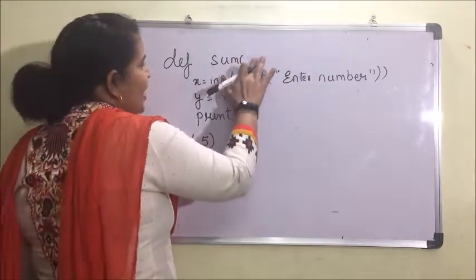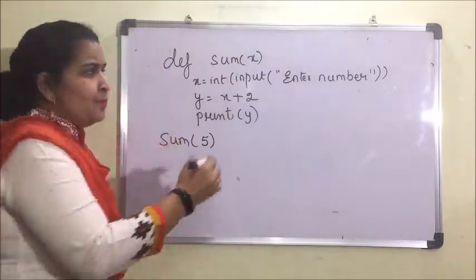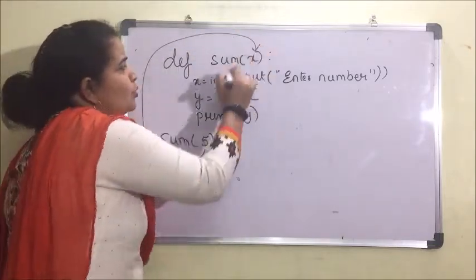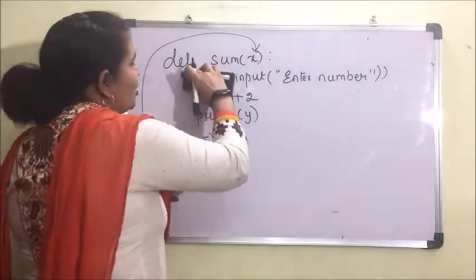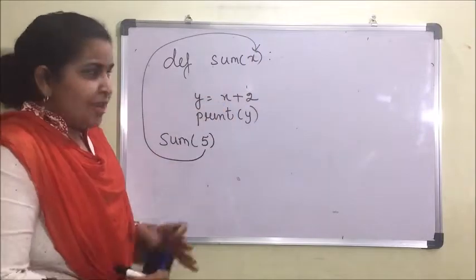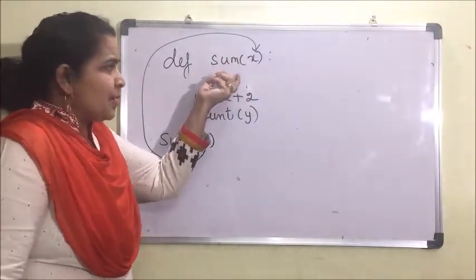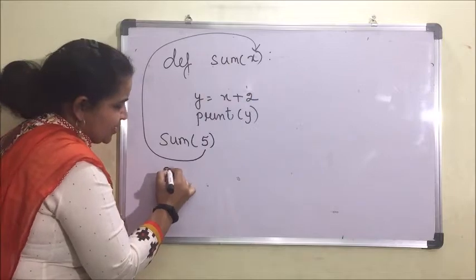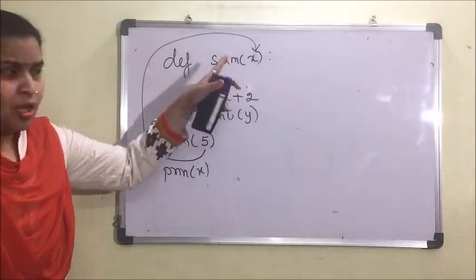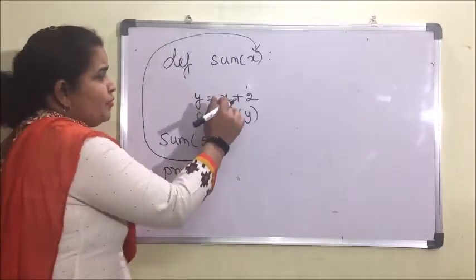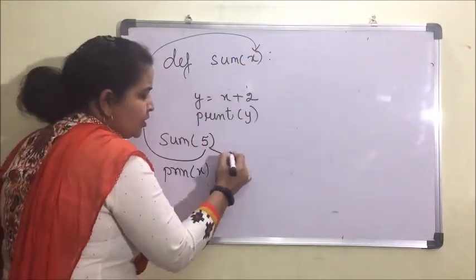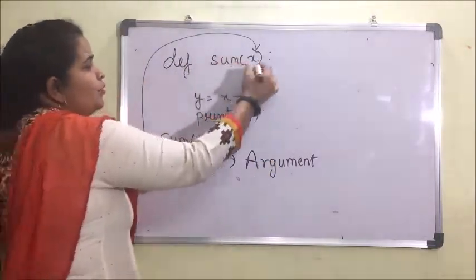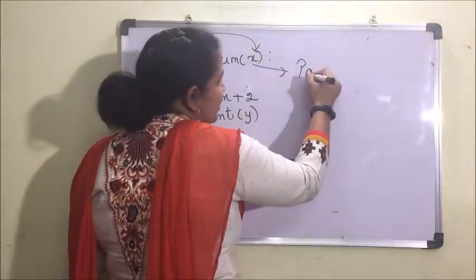Something should be there to catch this number, so we have to write a variable in the function definition. When we call this function, the value will go to this variable. In this case we will not use the outer x — that x is the local variable of the sum function. We cannot access it outside. The value we are sending is known as the argument, and this x that receives it is known as the parameter.